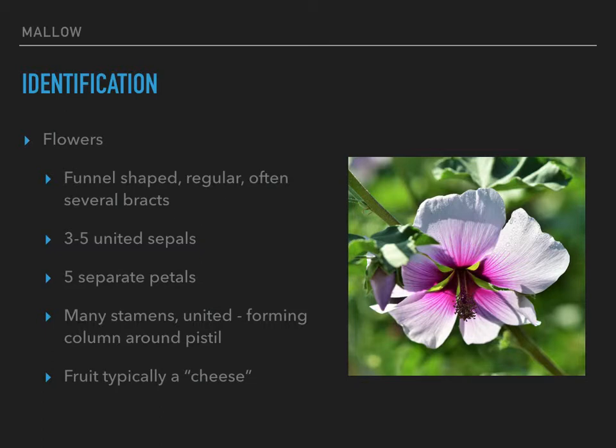The type of fruit it makes is usually called a cheese. When you talk about common mallow, the seeds are called cheeses — it's a circular arrangement of seeds in wedges that look like a block or wheel of cheese. Or like the Trivial Pursuit game piece where you put the wedges in that circle. That's what they look like a lot of times; not all of them, but many do.